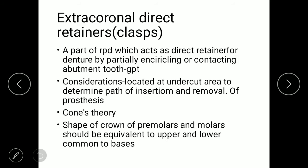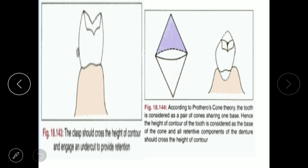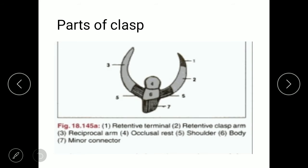Clasps should be located at the undercut area for determining the path of insertion and removal. A main theory involved here is the cone theory. According to cone theory, the shape of the crown of premolars and molars should be equal in the upper and lower structures, forming the basis for clasp design.